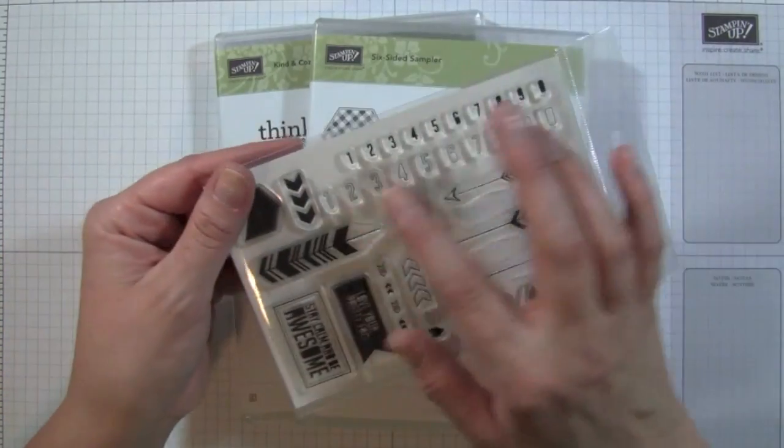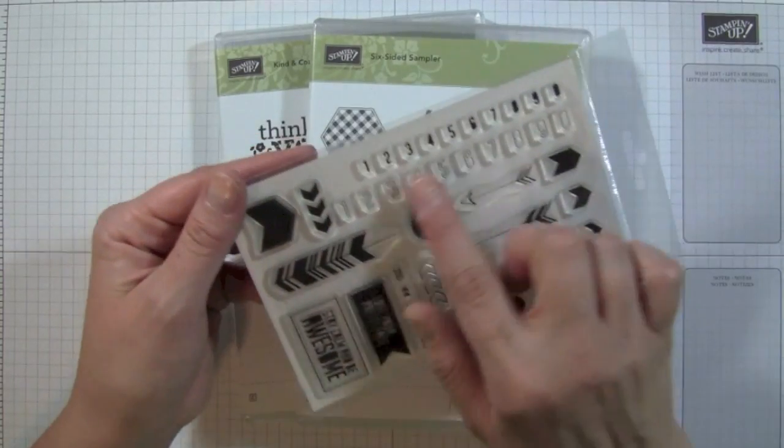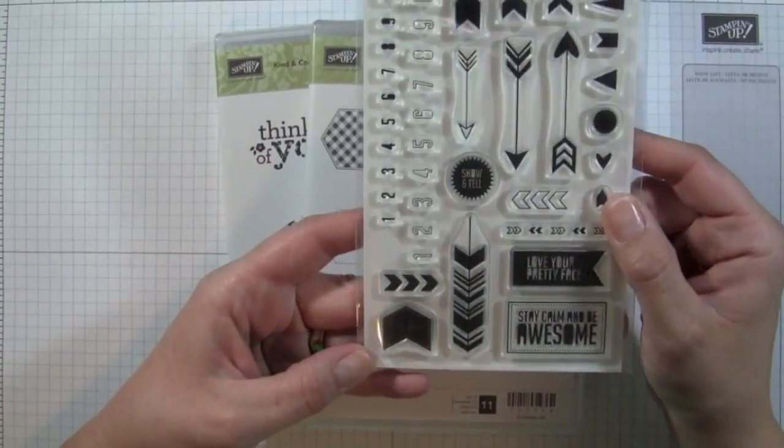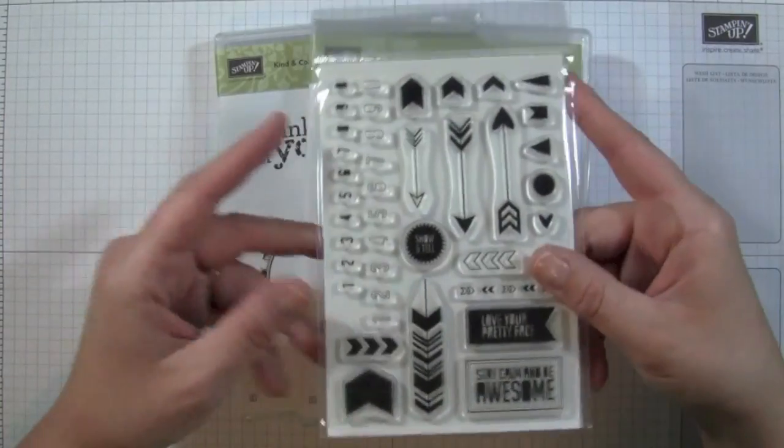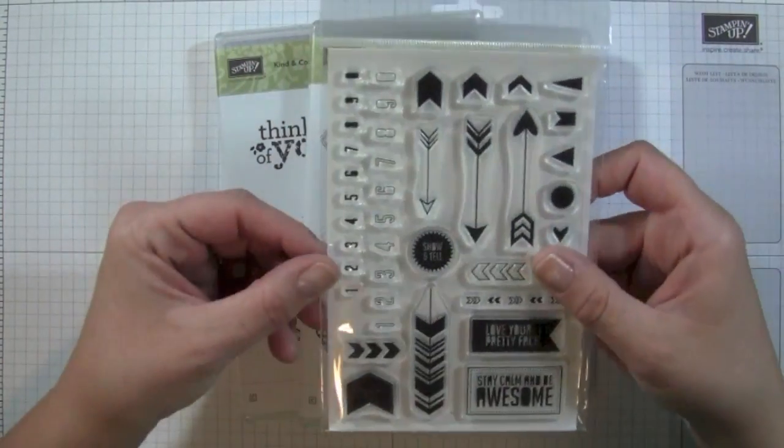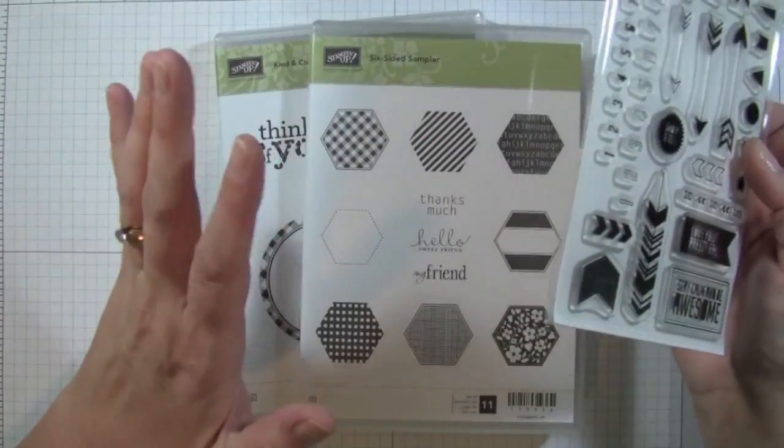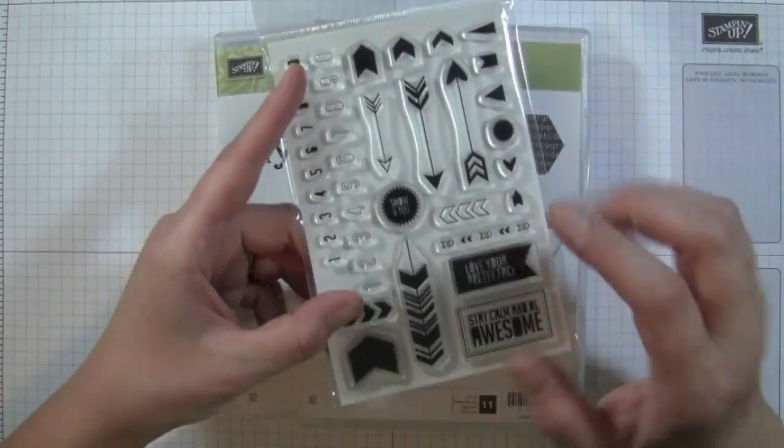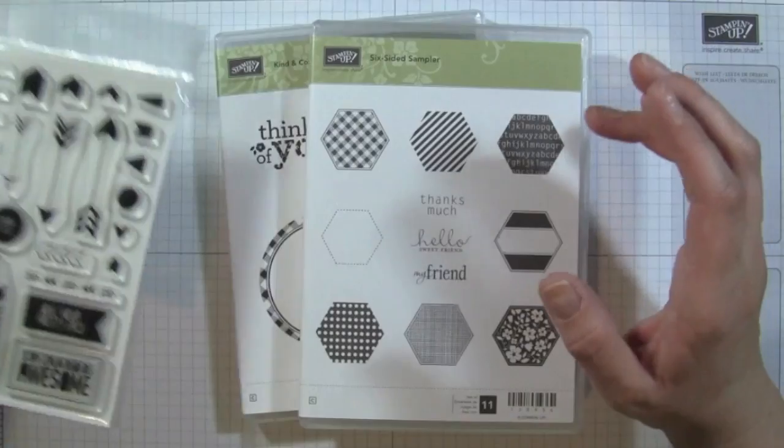It has some great sentiments, arrows, and numbers, and there's a couple of other different photopolymer stamps. Now, one thing about photopolymer stamps, they only have them in this, they don't have them in a rubber cling or wood mount version, it's just the photopolymer stamps right now.